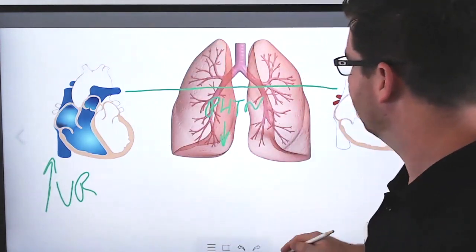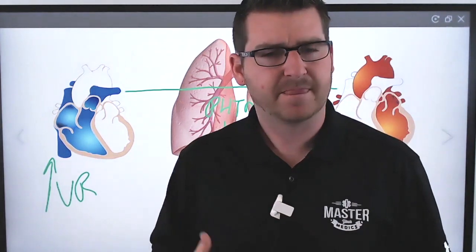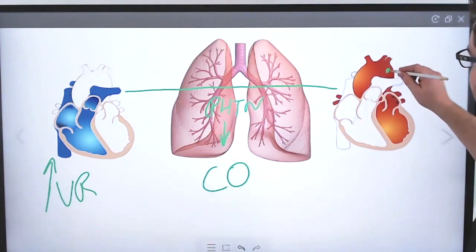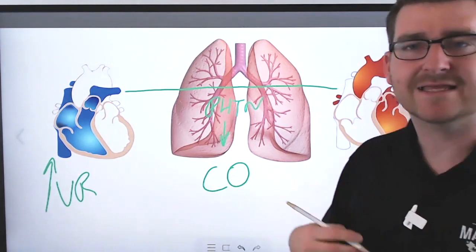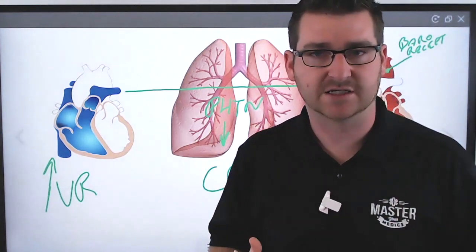On top of that, the overall cardiac output is going to decrease for some interesting reasons. So one of those reasons is because the baroreceptors that are inside the aorta, and a baroreceptor is a pressure receptor, those baroreceptors are going to detect that increased intrathoracic pressure.